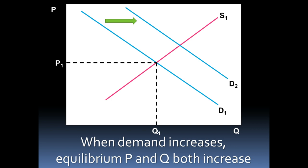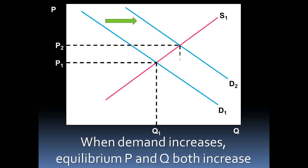When demand shifts right, at the original equilibrium price it creates a shortage — more people want coffee than is being supplied. As a result, prices get bid up as people compete by offering slightly higher prices, until the price rises to where quantity supplied equals quantity demanded. We reach a new equilibrium, and both price and quantity increase to P2 and Q2. So when demand increases, equilibrium price and quantity both increase.